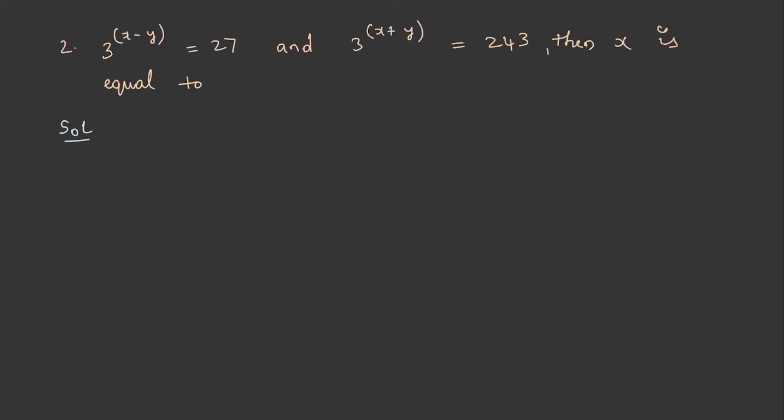It is given as 3 power x minus y is equal to 27, and 3 power x plus y is equal to 243. Let us write these numbers in terms of 3 to make the bases same.